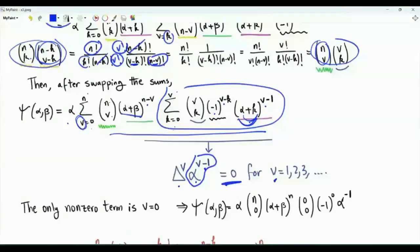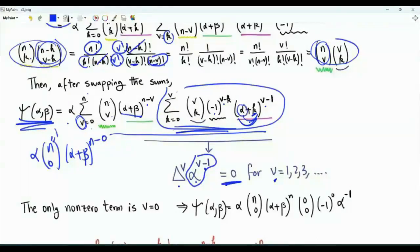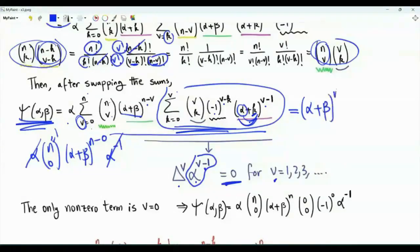The only surviving term corresponds to v equal to 0. When v equals 0, we have 0 choose 0 which is 1, times minus 1 to the 0 which is 1, and k is 0, giving alpha to the power v minus 1 equals alpha to the minus 1. Epsilon of alpha and beta equals alpha times n choose 0 times alpha plus beta to the power n minus 0, and alpha times alpha to the minus 1 equals 1. We obtain the desired result that epsilon of alpha and beta equals alpha plus beta to the power n.